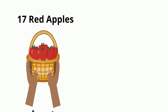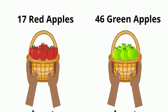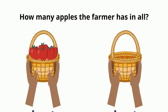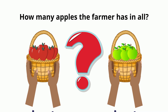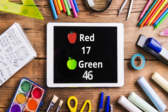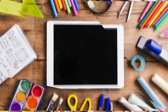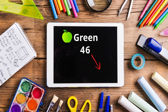Let's assume a farmer collects 17 red apples in a basket and 46 green apples in another basket from his farm trees. How many apples does the farmer have in all? Let's find out by adding them together. One number is 17 and the other is 46. In 17 there are 7 units and one ten, and in 46 there are 6 units and 4 tens. Let's add them using a T-table for units and tens.